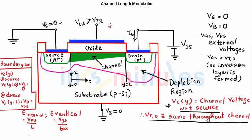Let's start with a cross-sectional view of an NMOS transistor where source and body are both grounded, meaning there will be no substrate bias effect or body effect. VGS and VDS are external voltages. VGS is greater than VT0 (zero substrate bias), so the inversion layer is formed. The pink region is the depletion region around the channel near source. We need to find the effect of channel length modulation on current ID.